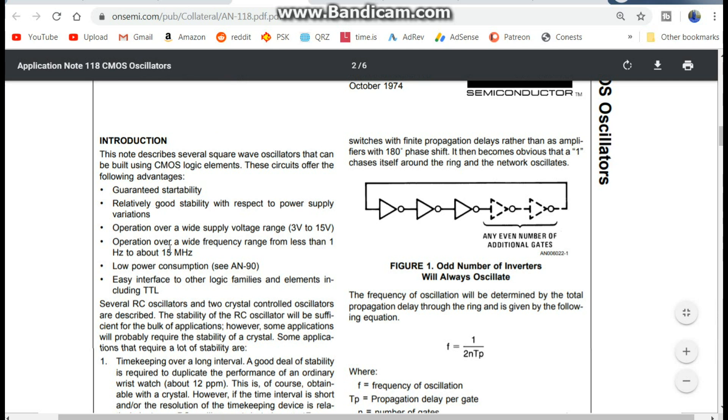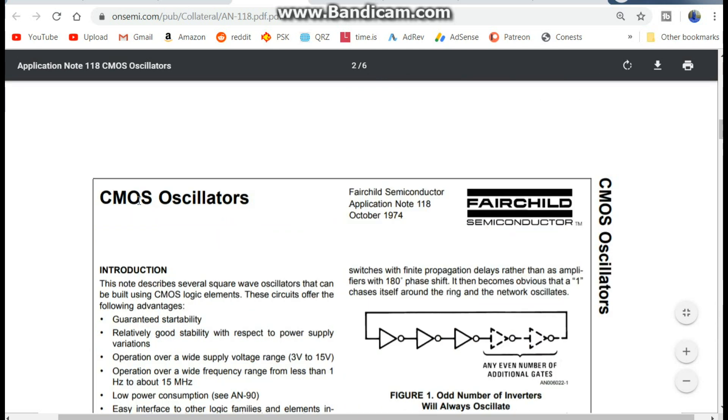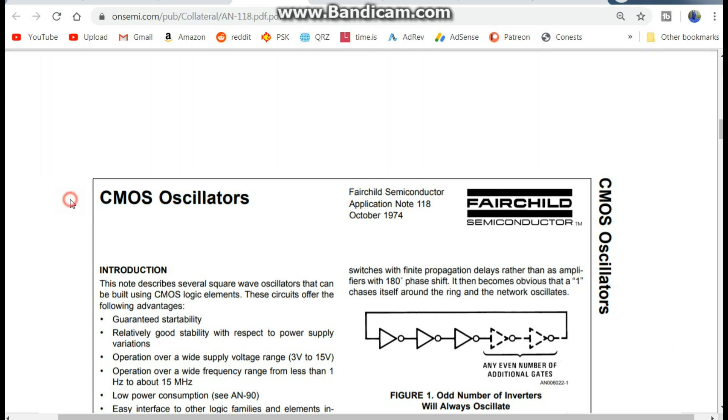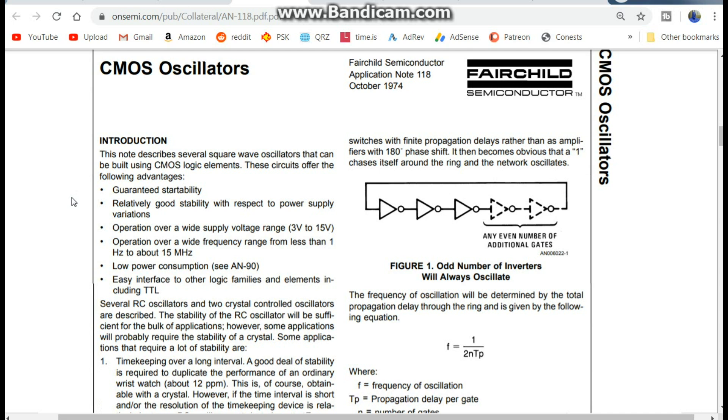So what this is talking about is creating a CMOS oscillator, ring oscillator, using three inverters. Has to be an odd number, do an even number, it won't happen. And the reason that happens is right here, the propagation delay is what causes a ring oscillator to work.